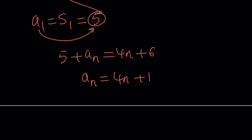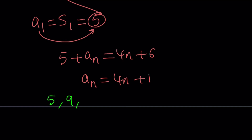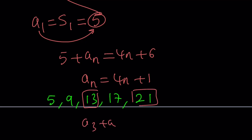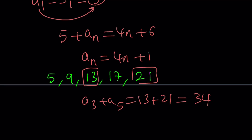Let's find the first 5 terms using a sub n equals 4n plus 1: n=1 gives 5, n=2 gives 9, n=3 gives 13, n=4 gives 17, n=5 gives 21. What we're looking for is a sub 3 plus a sub 5, which is 13 plus 21 equals 34. Notice the sequence increases by 4 each time — plus 4, plus 4, plus 4, plus 4 — confirming the arithmetic nature of the sequence.